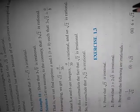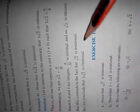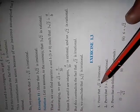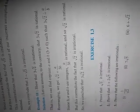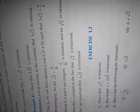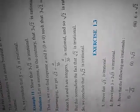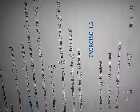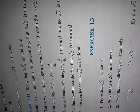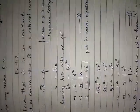Exercise 1.3 is a very important part of the question paper — these questions are very important from the examination point of view, so try to listen carefully. The first question is to prove that √5 is an irrational number. We have already studied that √5 is irrational since 5 is a prime number, but in this class we will prove it theoretically.